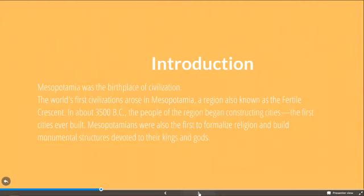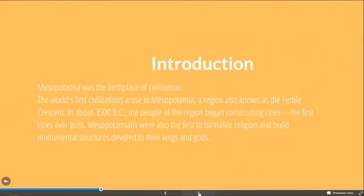This is about 4500 to 3500 BC — people aren't really sure. The people of the region began constructing the first cities ever built. Mesopotamians were the first to have a formal religion and build monumental structures devoted to kings and gods, meaning they were the very first people to build temples for a specific god they believed in.